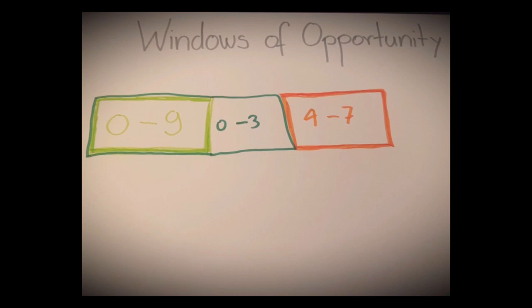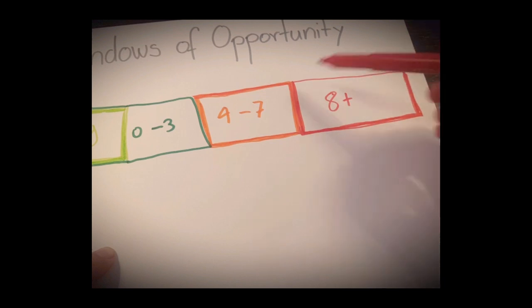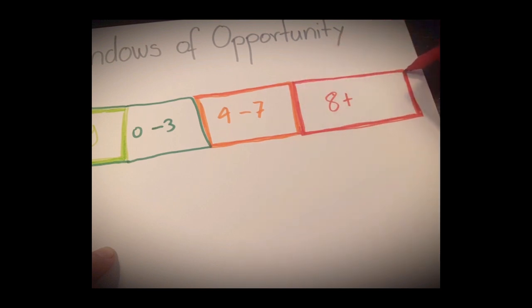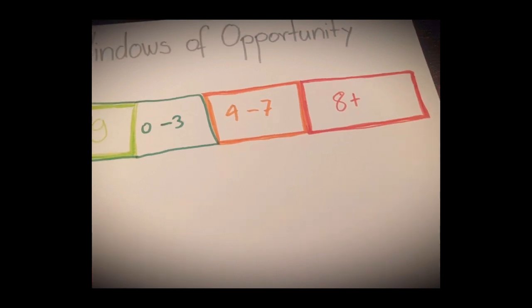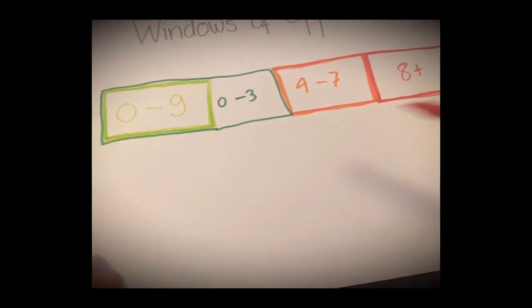And the third window of opportunity starts from eight till they are grown up. Eight plus. During this time learning languages do not bring any advantage. That means that people that learn foreign languages as grown-ups or at the age of eight learn it basically the same way. They have to learn explicitly. They have to learn words, have to study the language and it doesn't happen the same way as when the child is younger.